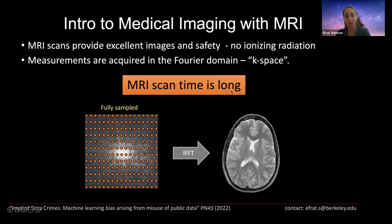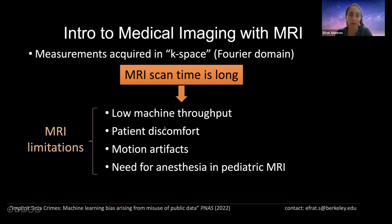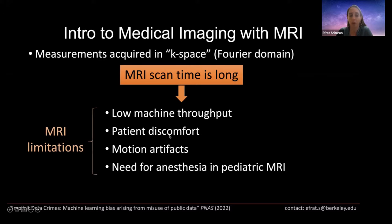If any of you have had an x-ray or CT exam, you know it takes just a few seconds — maybe 10 seconds. But an MRI exam usually takes anywhere between half an hour to a full hour per patient, and that happens due to the low sampling rate. This leads to the main limitations of MRI: low machine throughput — usually one or two persons per hour — and patient discomfort, because people need to lie inside the MRI scanner for a long time without moving.